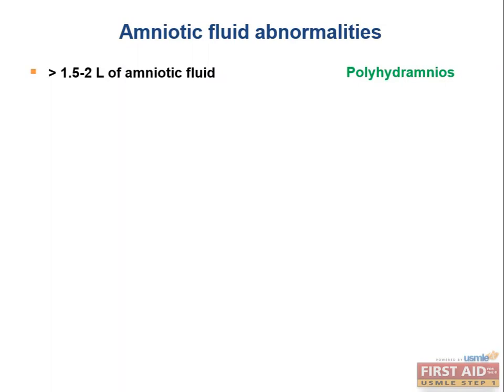Polyhydramnios can also be caused by gestational diabetes, which leads to fetal polyuria. It can lead to complications including premature birth, pregnancy-induced hypertension, premature rupture of the membranes, or abruption. Management may include draining the fluid and indomethacin, which is an NSAID, to reduce fetal urine production. Duodenal atresia is the most common answer associated with polyhydramnios.